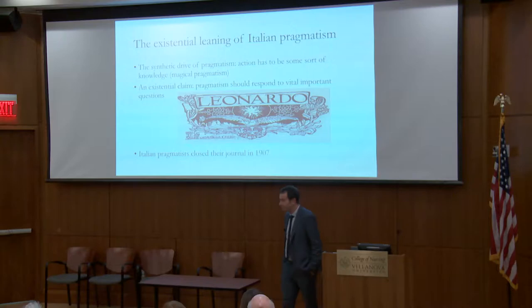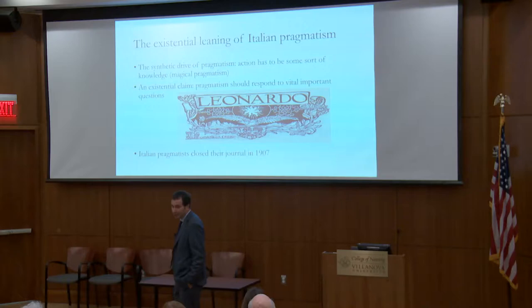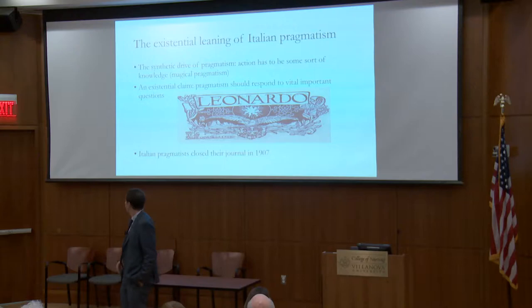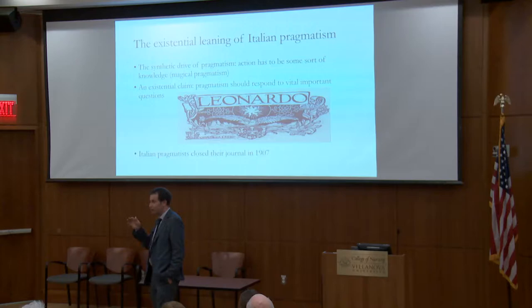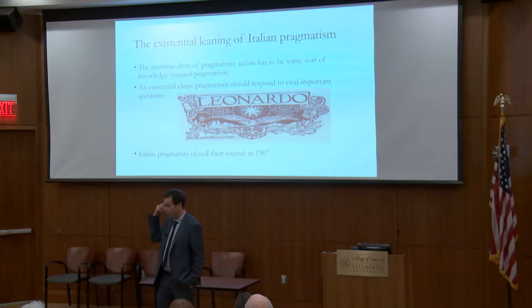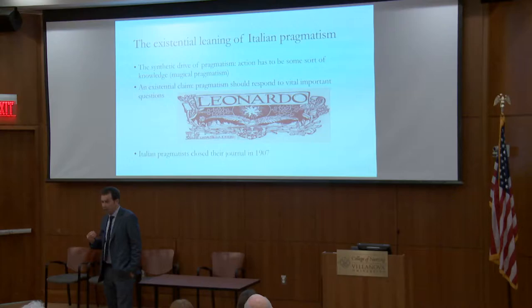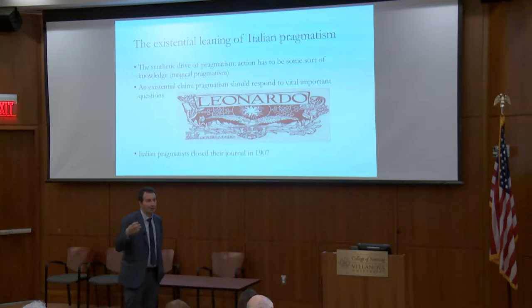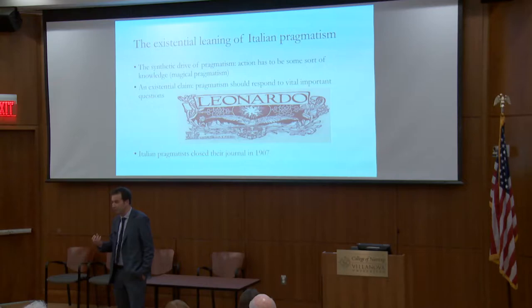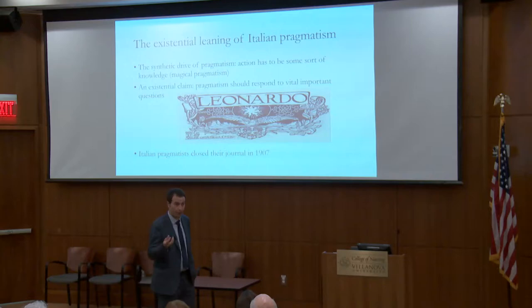Here is the contribution of Italian thinkers. This image was the front page of their journal, called Leonardo — like Leonardo da Vinci — a very important journal published between 1903 and 1907, in which this bunch of young people tried to do something new. They took pragmatism from William James and America and tried to use it against the usual Italian academic culture, saying there is something here that is not merely rationalist or intellectualist — something that can really change our world and our understanding of the world.